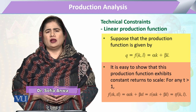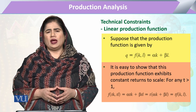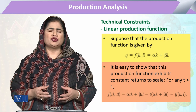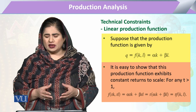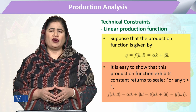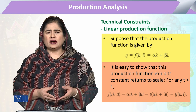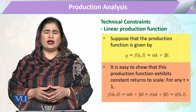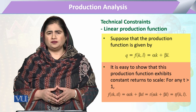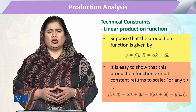The output level Q is a function of capital and labor, and here capital and labor have marginal productivities of alpha and beta respectively. The output is expressed as Q equals alpha multiplied by L plus beta multiplied by K. Here alpha and beta are the marginal productivities of labor and capital.